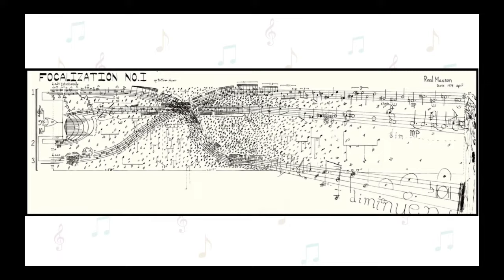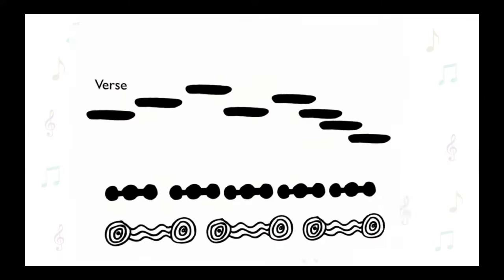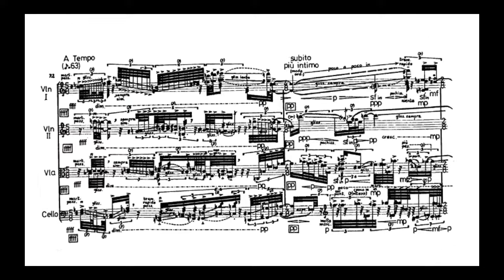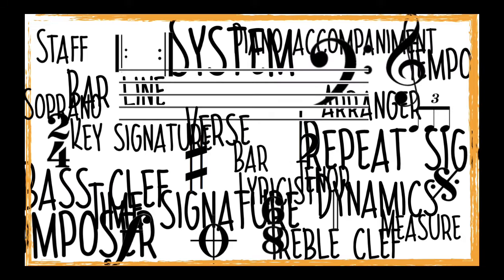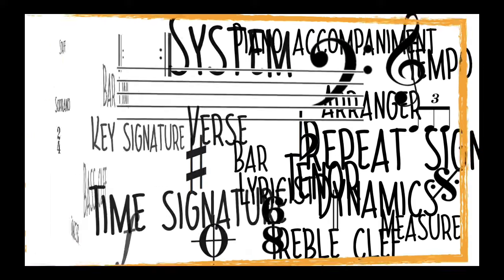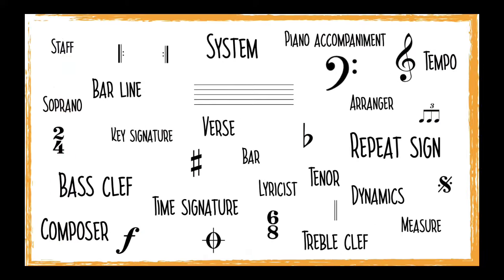When seeing a choral score for the first time, it can look something like this, or like this, or like this. Whichever it is, it might feel too overwhelming and scary to make sense of everything that you see. There is a reason the choral score looks a little overwhelming at first — there are a lot of different terms that you will be hearing about, but don't worry! I will explain what they mean and where you can find them in your score.